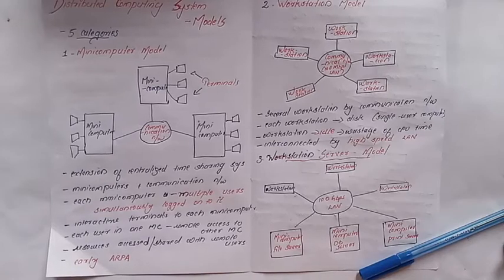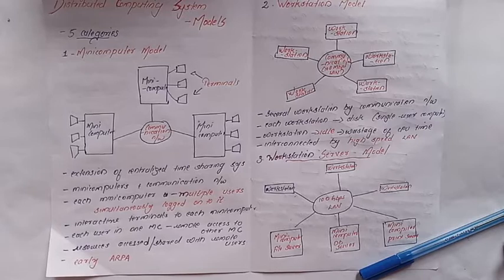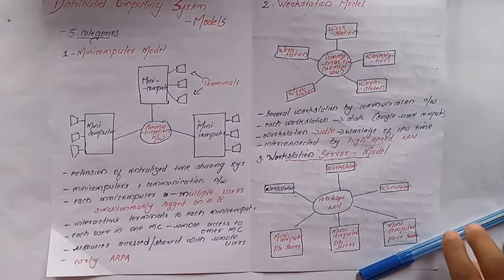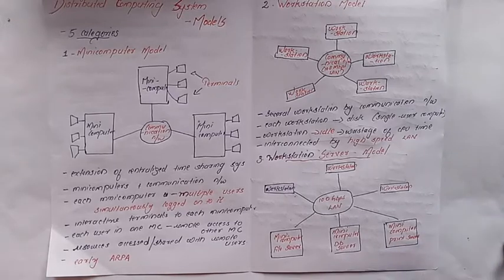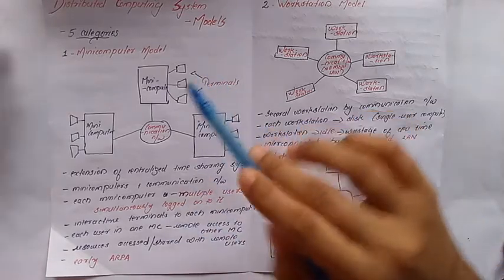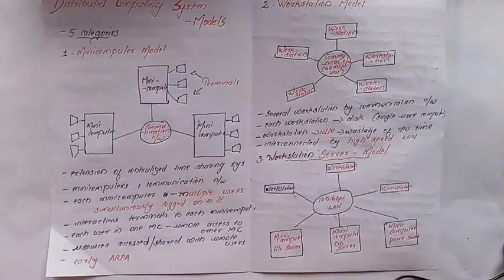Our next topic is Distributed Computing System Models. We have a distributed system with 5 categories. The first one is the Mini Computer Model.